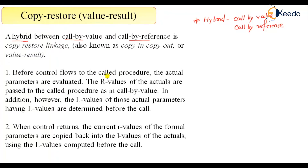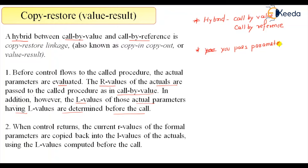Before control flows to the called procedure, the actual parameter is evaluated. The R-values of actuals are passed to the called procedure, just as in call by value. In addition, the L-values of those actual parameters having an L-value are determined before the call. So what we pass here is the R-value.